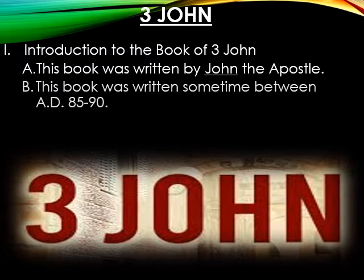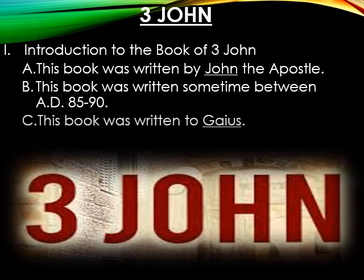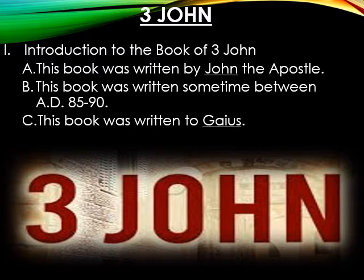This book was written sometime between A.D. 85 and A.D. 90, while John was residing in Ephesus. This book was written to a man named Gaius — we believe this may have been Gaius of Macedonia, because he was a traveler with Paul to Ephesus where John would later become a pastor or bishop of a church. If true, this may indicate that both John and Gaius knew each other and possibly ministered together.